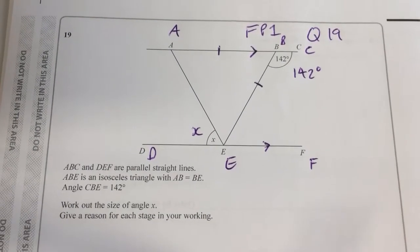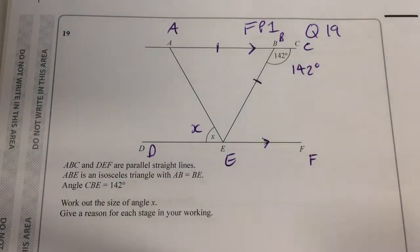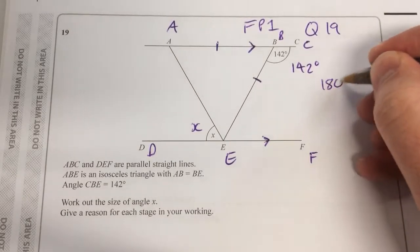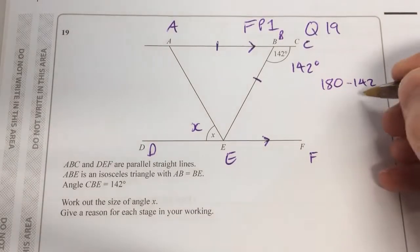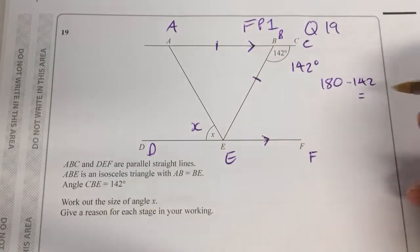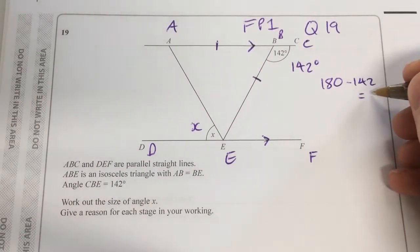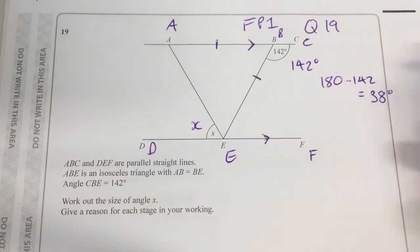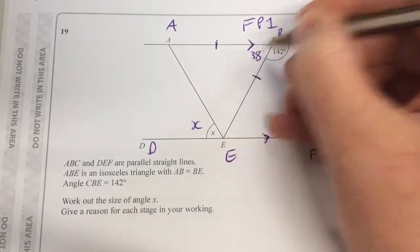My guest presenter is going to help me. What's the first thing that I need to do? You're going to do 180 minus 142. And why do I do that? Because it's an angle on a straight line. So I've got an angle on a straight line there, and it gives me 38.